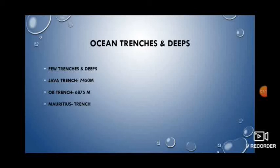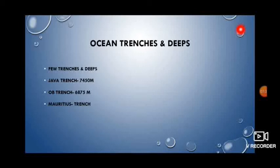There are very few deeps and trenches in the Indian Ocean. About 60% of the ocean consists of deep sea plains with depths ranging between 4,000 to 6,000 meters. The significant trenches are the Java-Argas-Sunda Trench with a depth of 7,450 meters, the Ob Trench with 6,875 meters, and the Mauritius Trench.